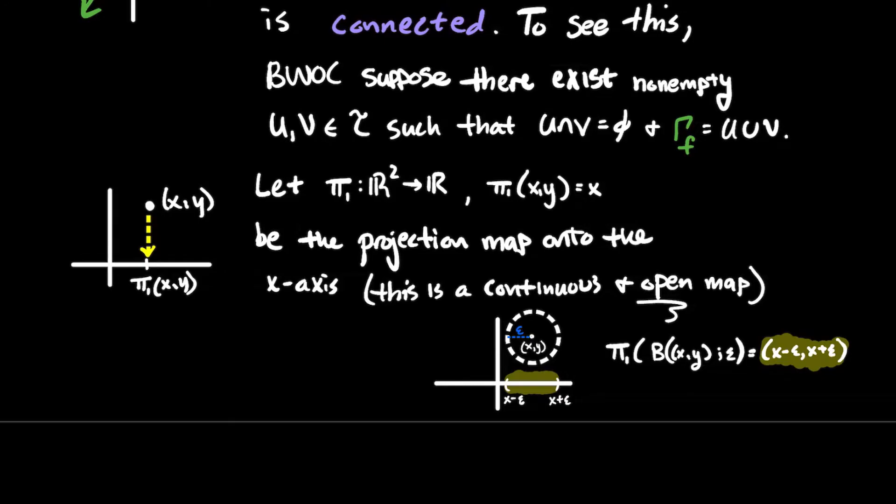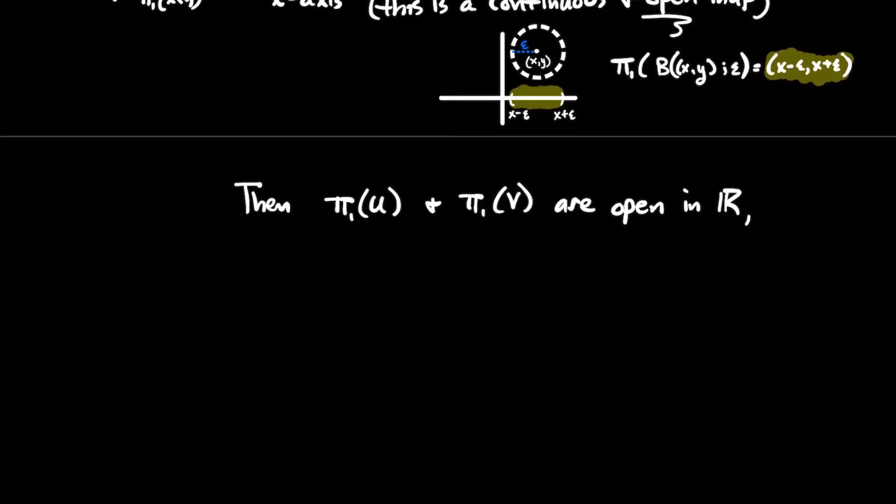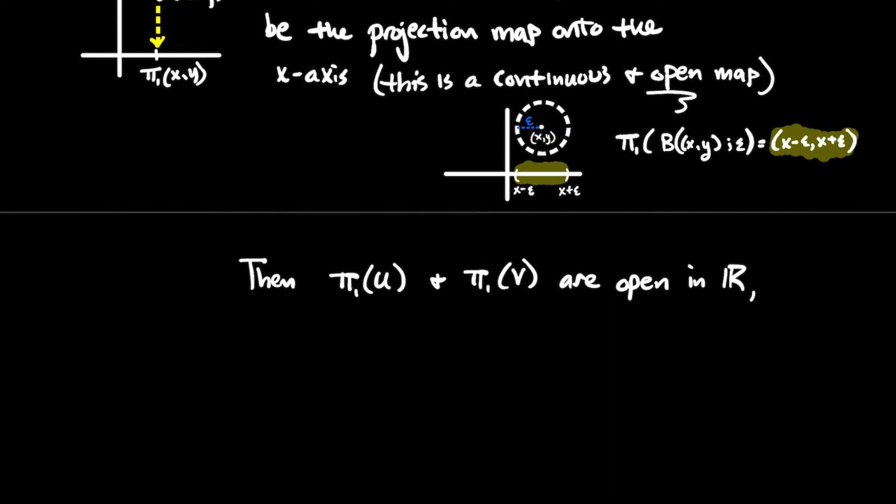So that is going to be an open map. And what that means is that the image of an open set is open. Don't get that confused with continuity. Continuity says the preimage of an open set is open. But an open map goes kind of the forward direction, and the image of an open set is open. And that's important for us because, well, if U and V were open in the codomain, then π1 of U and π1 of V are going to be open in R.